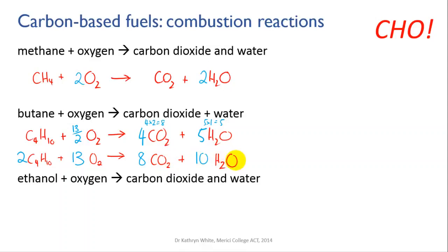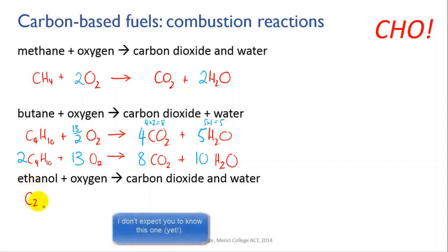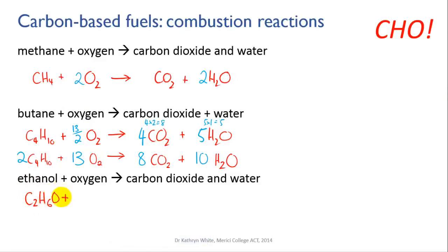Eight times two is sixteen, plus ten is twenty-six — so we're all good. This frequently happens with combustion reactions. If you ever run into a situation where your oxygen looks a bit weird — four and a half, six and a half, or ten and a half oxygen molecules — all you need to do is multiply through the entire equation by two. Last one: ethanol. Ethanol has the formula C₂H₆O. It's the alcohol in spirits and beer, and is also blended with petrol in cars. We burn it in oxygen and it gives carbon dioxide and water.